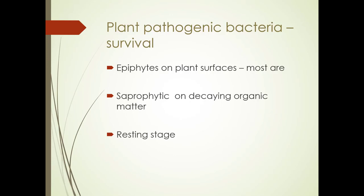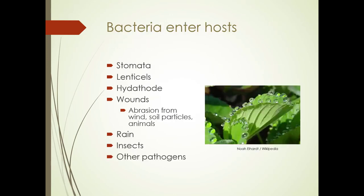There's also a resting stage. Bacteria can enter the host through stomata, lenticels, and hydathodes — those little pore-like structures at the end of leaves where guttation happens, as shown in the picture here. They also enter through wounds, abrasion from wind, and soil particles.